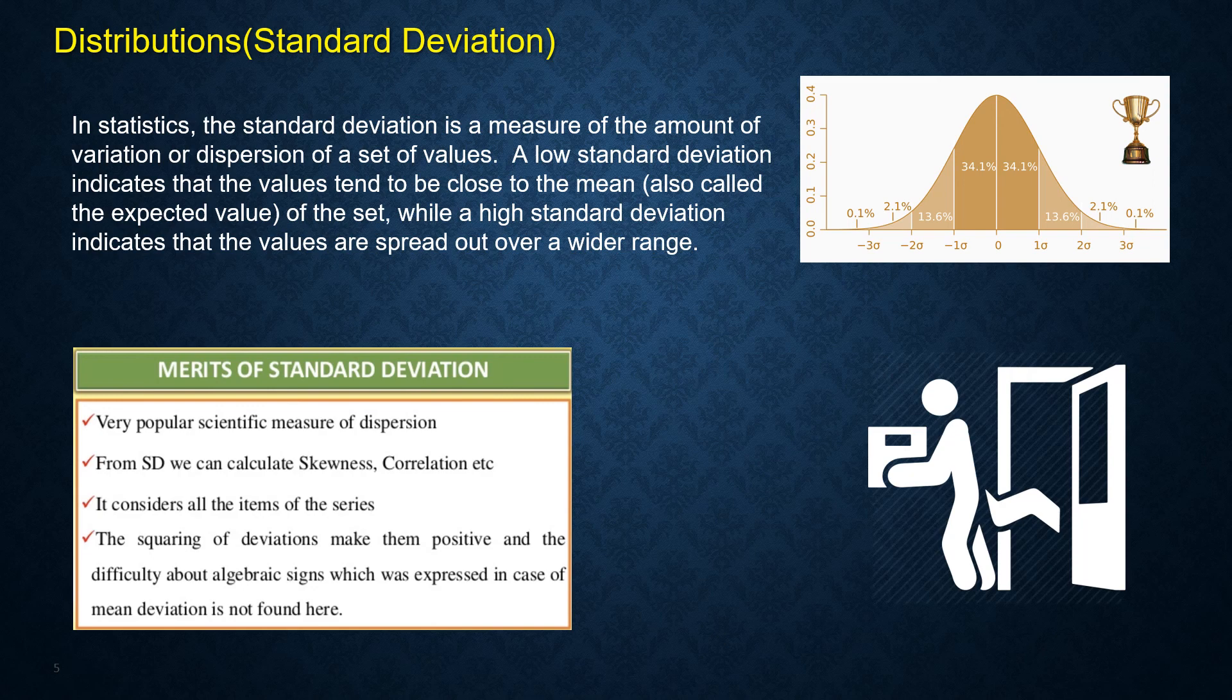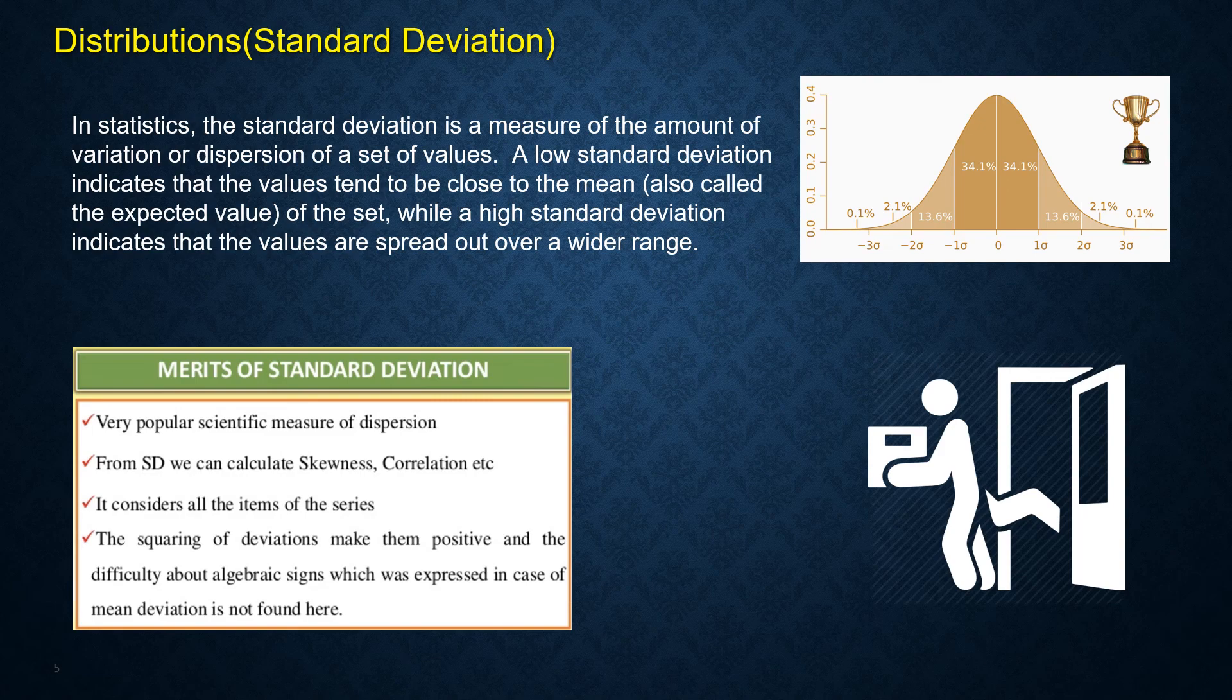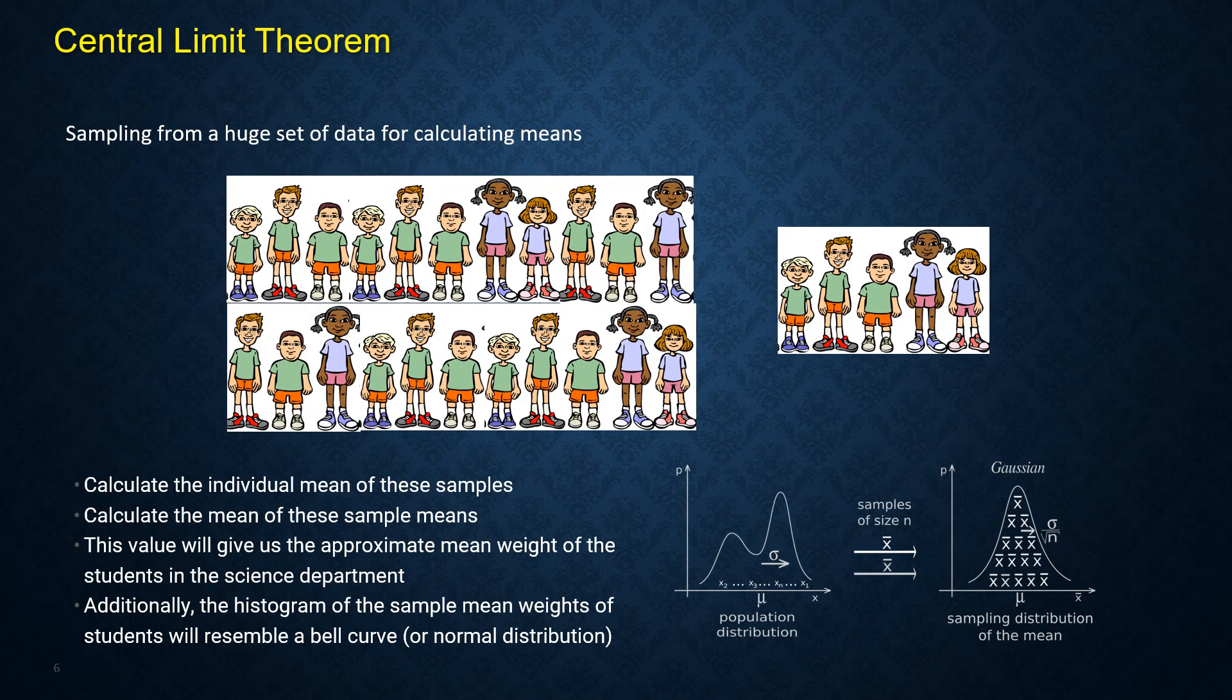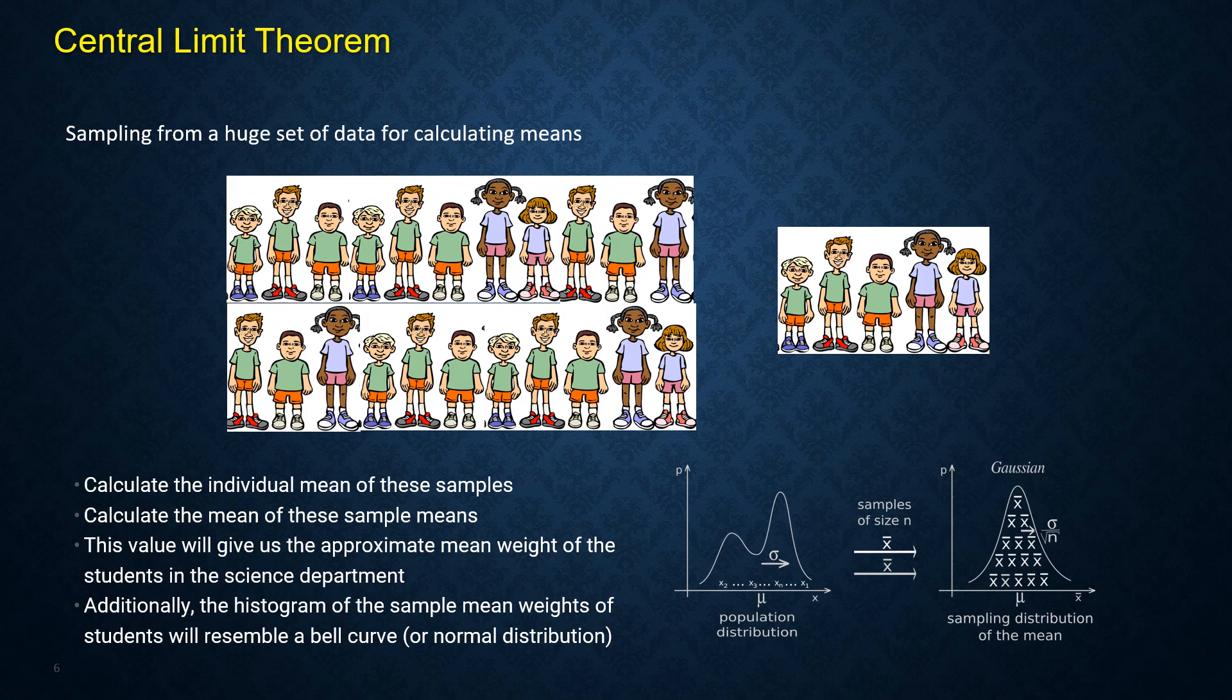Standard deviation is a very popular measure in data science. We can calculate skewness and correlation of data sets that helps analytics and predictions in machine learning. The central limit theorem is about taking samples and finding the means. As you take more samples, your graph will look more like a bell curve.